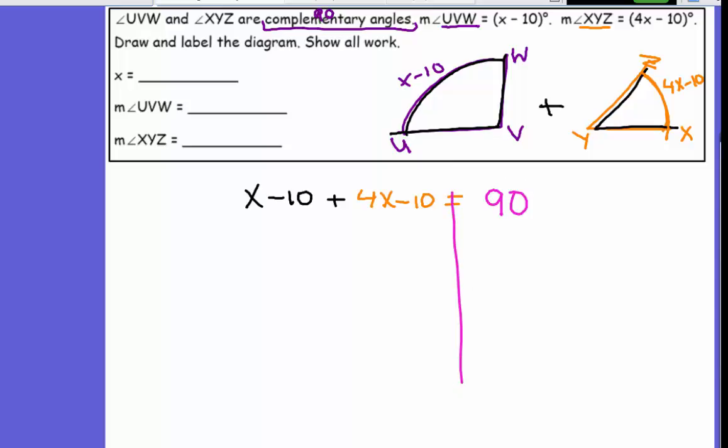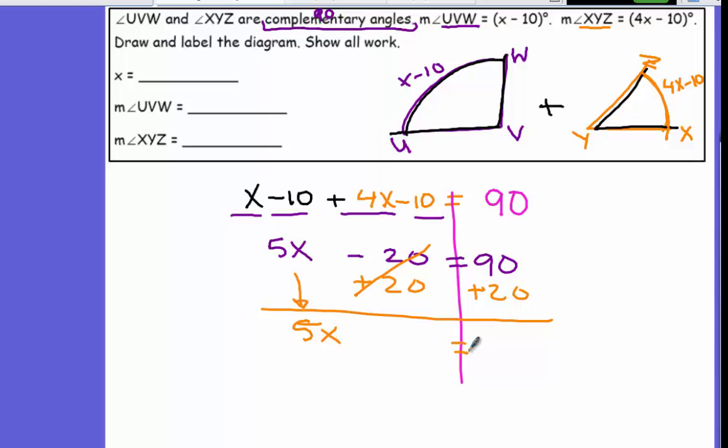Then you solve for X, plug back in, and find the size of the angle. So 1X and 4X, that's 5X, negative 10 minus 10, that's negative 20, equals 90. Plus 20, plus 20, so 5X equals 110. Then you divide by 5 to both values, so X equals 22, so my X is 22.